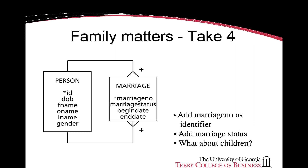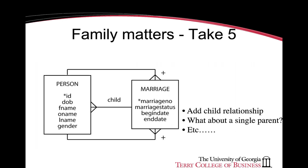If we were to think about children that are the result of a marriage, we can add another relationship called child, related to the person entity, indicating the people that are the result of a marriage. This data model can be further complicated once we think about other types of familial relationships.